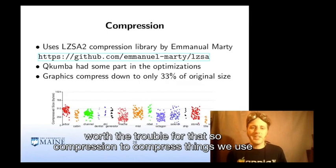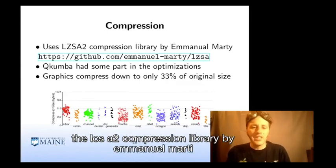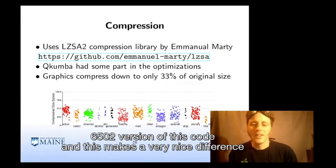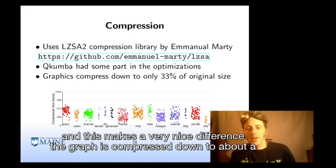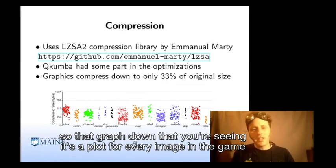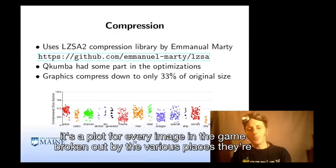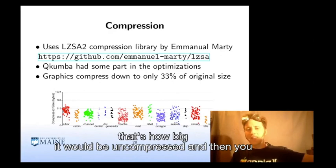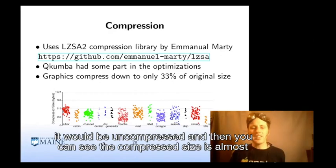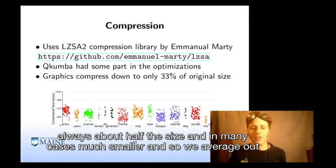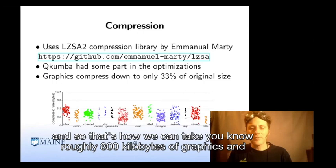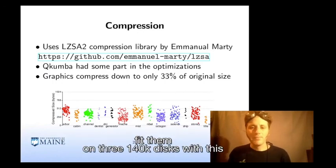For compression we used the LZSA2 compression library by Emmanuel Marti, with Cucumber having contributed to the 6502 version of the code. This makes a very nice difference — graphics compress down to about a third of the original size. The graph shown plots every image in the game broken out by location. The top shows 24 bytes uncompressed; the compressed size is almost always about half, and in many cases much smaller, averaging about a third of the size. That's how we can take roughly 800 kilobytes of graphics and fit them on three 140K disks.